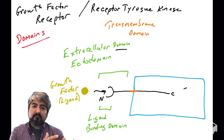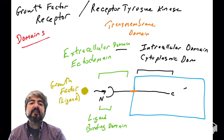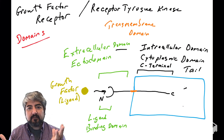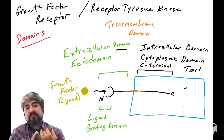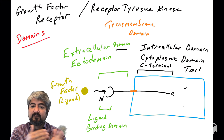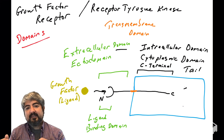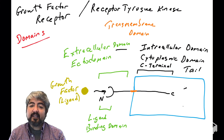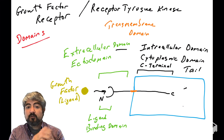After the transmembrane domain, we have the domain inside the cell — the intracellular domain. This region can also be called the cytoplasmic domain or the C-terminal domain, since it is at the end of the protein. For growth factor receptors and receptor tyrosine kinases, the intracellular domain, cytoplasmic domain, and C-terminal domain all refer to the same region inside the cell.